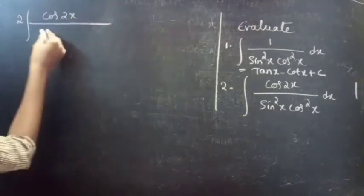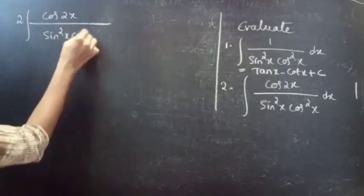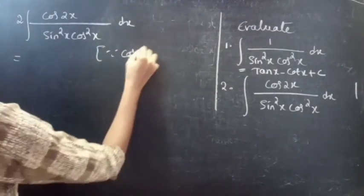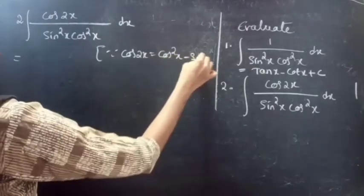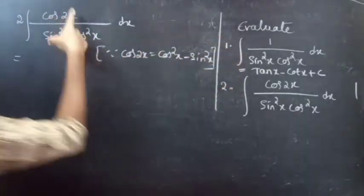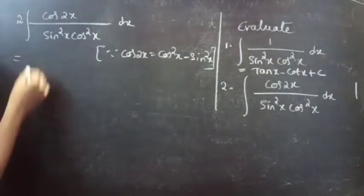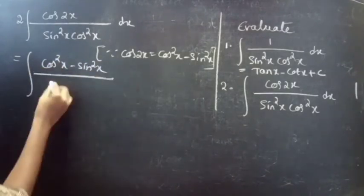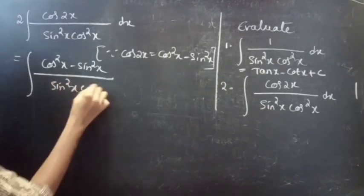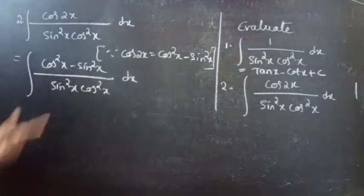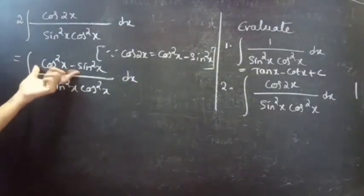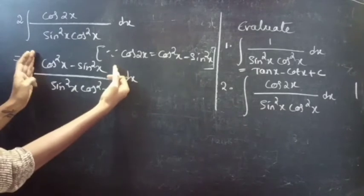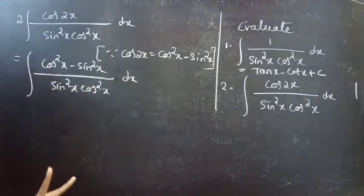The second integral: evaluate the integral of cos 2x divided by (sin²x · cos²x) dx. Since we know that cos 2x = cos²x - sin²x, we are going to replace cos 2x with cos²x - sin²x. This gives us (cos²x - sin²x) divided by (sin²x · cos²x) dx. Since we have two terms in the numerator with a minus sign, we can split this into two fractions.